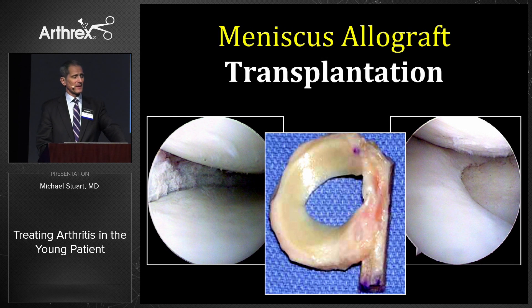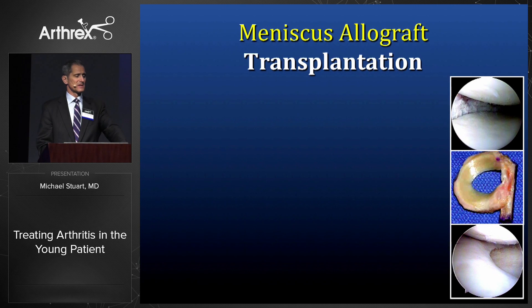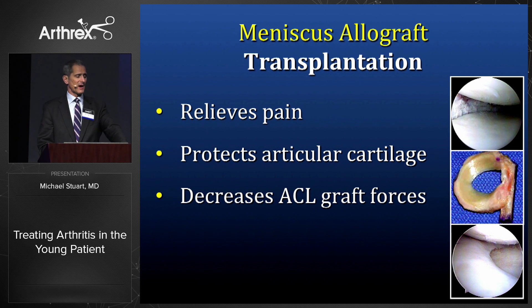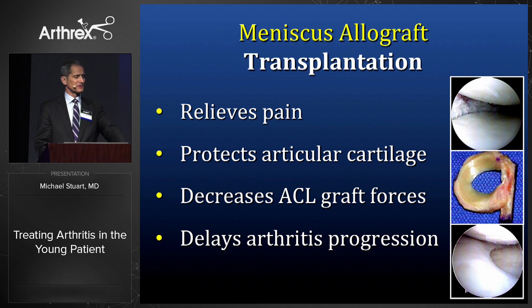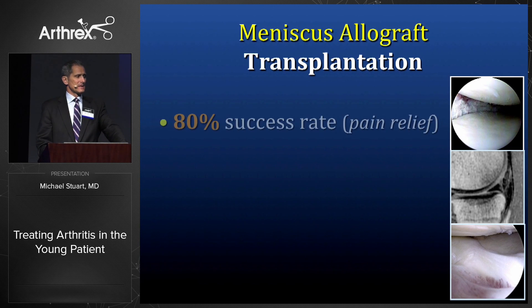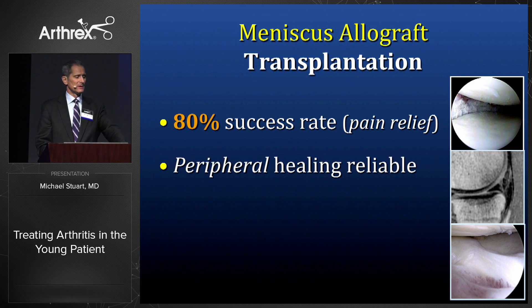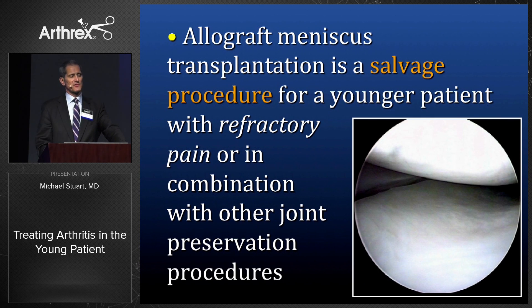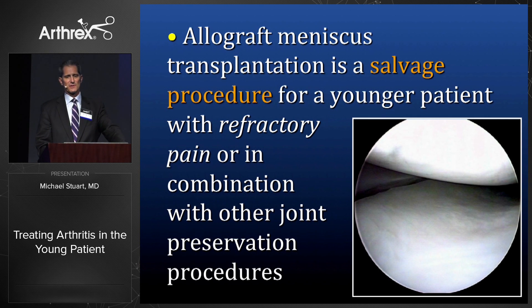We can't forget about meniscus deficiency. Meniscus allograft transplant has been shown to relieve pain, protect articular cartilage, decrease forces on ligament grafts, and hopefully delay arthritis progression in the young patient. Here's a second-look arthroscopy of a meniscus transplant — it is remarkable how well they heal. There's an 80% success rate based on pain relief. Peripheral healing is very reliable, but long-term biomechanical function and durability of the graft is questionable. Allograft meniscus transplant is still a salvage procedure for younger patients, usually done in combination with other joint preservation operations.